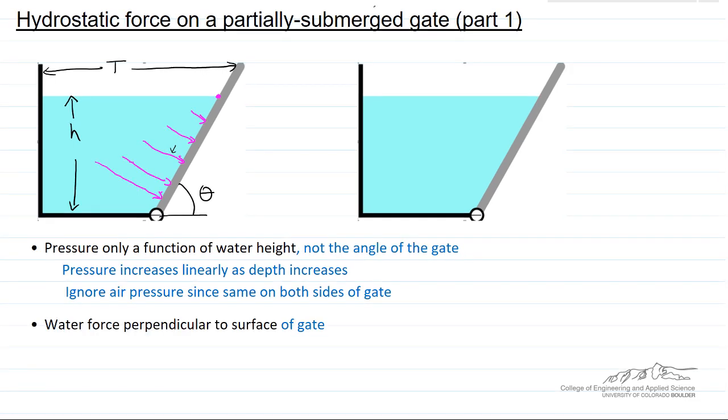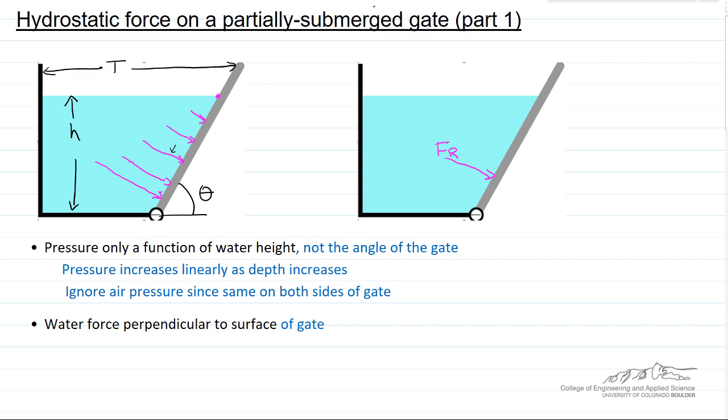Next, we want to replace this distribution of forces along the gate with a resultant force. This resultant force should exert the same force on the gate as the forces at different depths and should have the same moment as the integrated moments. This force is also perpendicular, so FR equals the integral of the pressure and the area of the gate that is underwater. Note that as the angle theta gets smaller, we have more gate underwater, so there's more force on the gate.